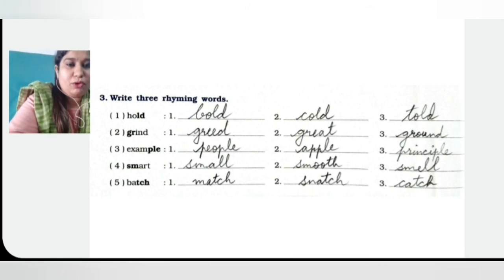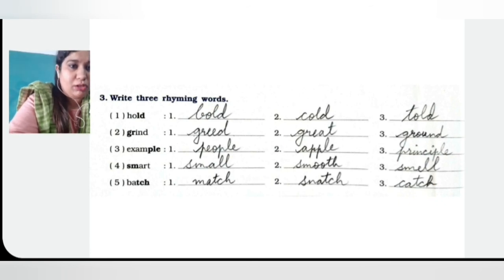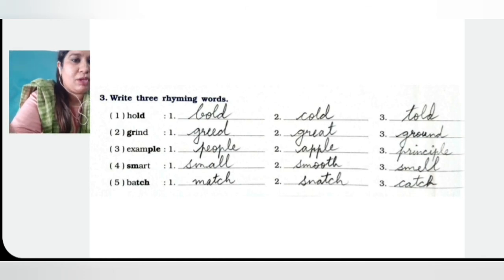For smart, we want the letters S-M at the beginning. S-M-A-L-L — small, S-M-O-O-T-H — smooth, and S-M-E-L-L — smell. So small, smooth, and smell.